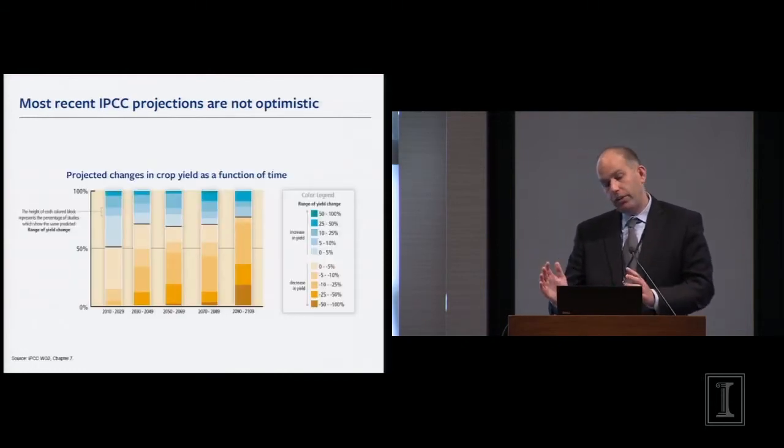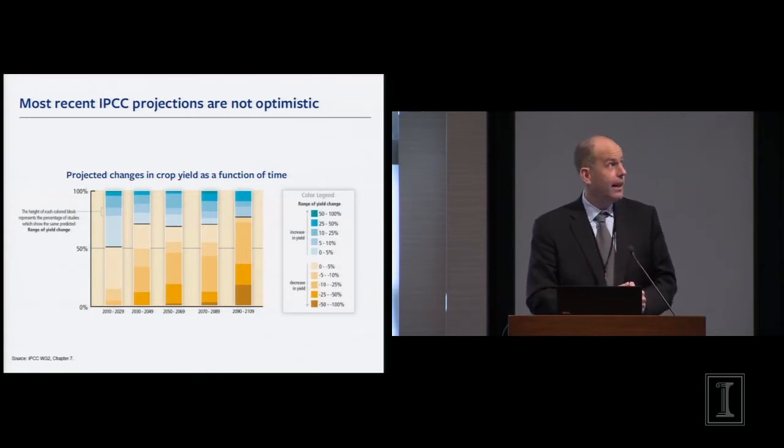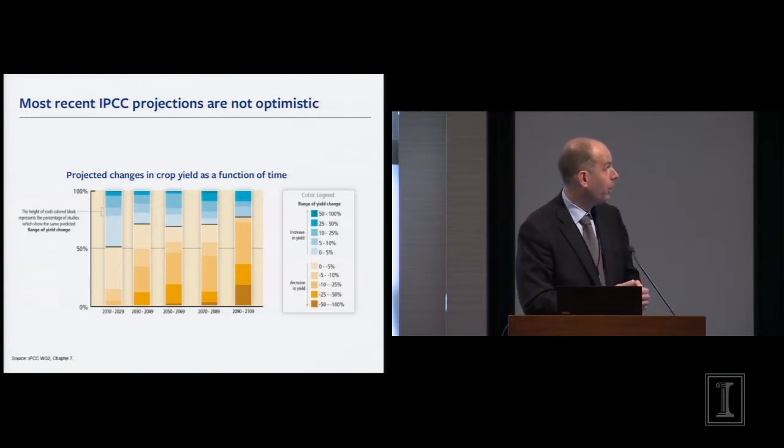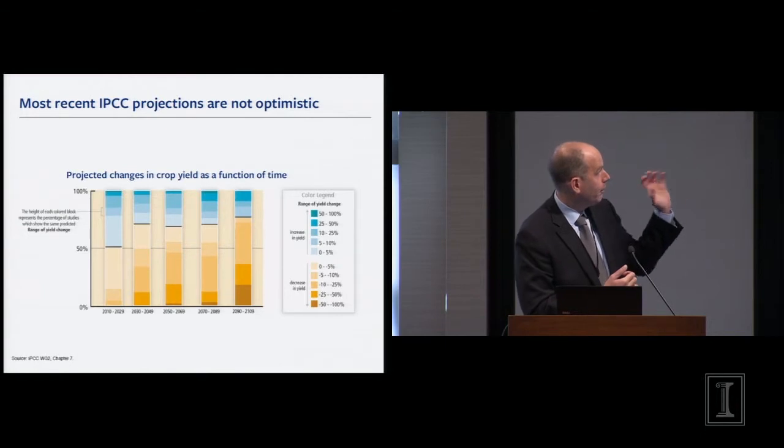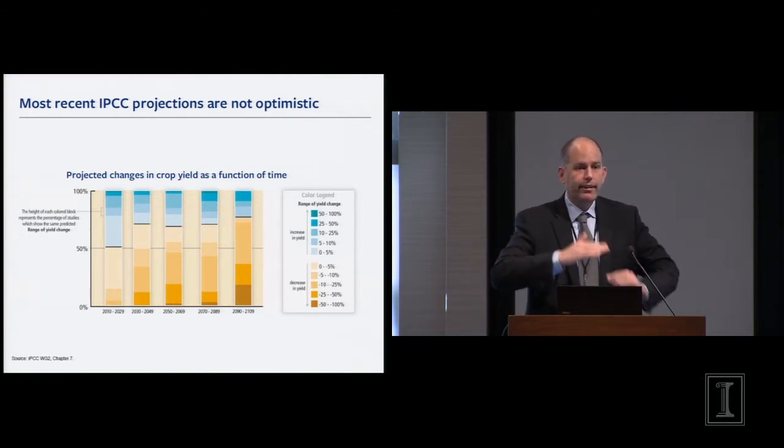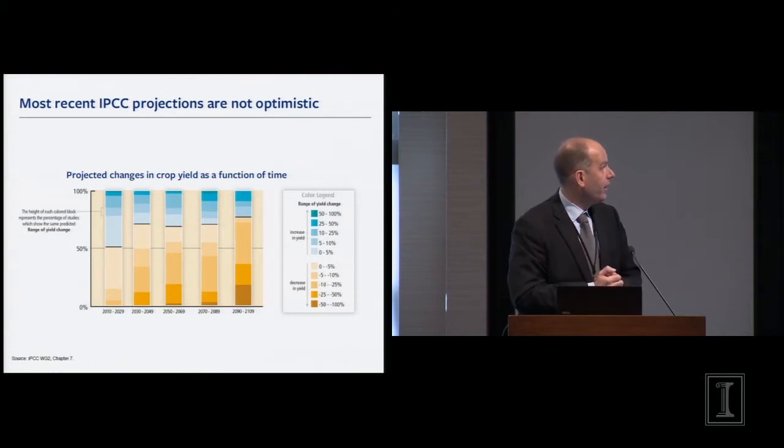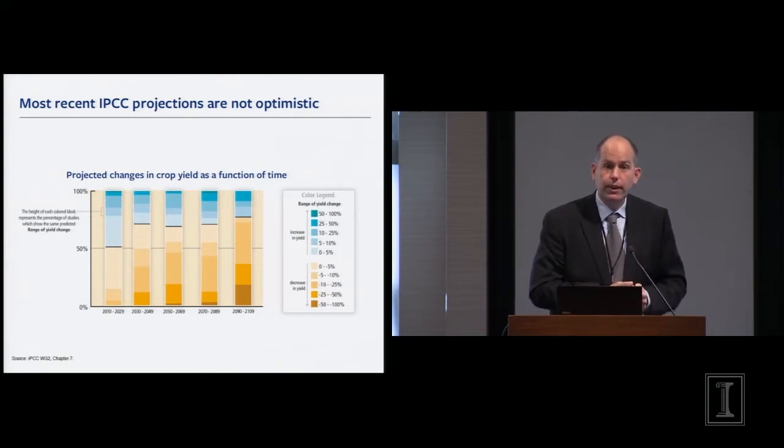If we look into the future, this is the most recent IPCC report. For those of you who haven't read Chapter 7 of Working Group 2, it's well worth reading. David Lobel was one of the lead authors there. If we're looking at projected changes in crop yield as a function of time, this is synthesizing studies across time and projection horizons. What you're seeing is that as you go out to end of century, fewer and fewer studies predict non-negative changes of climate change on crop yields.